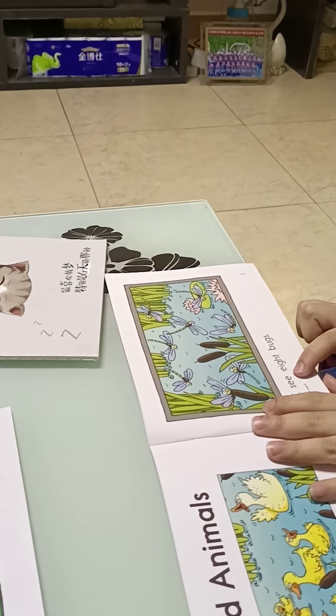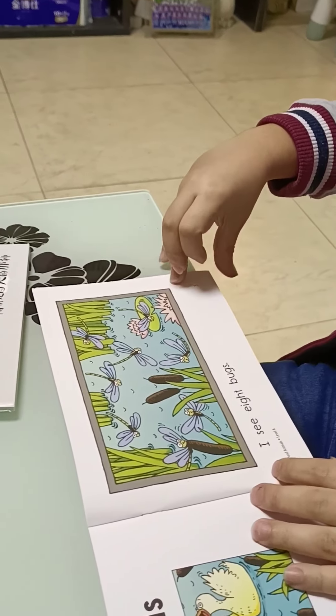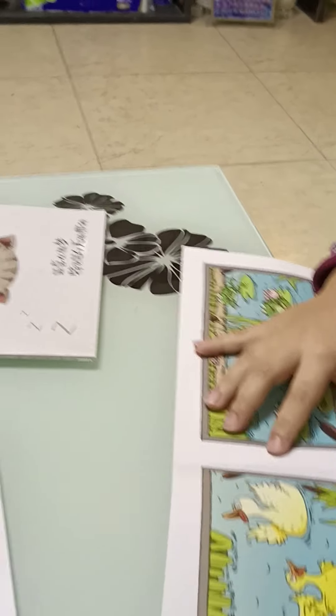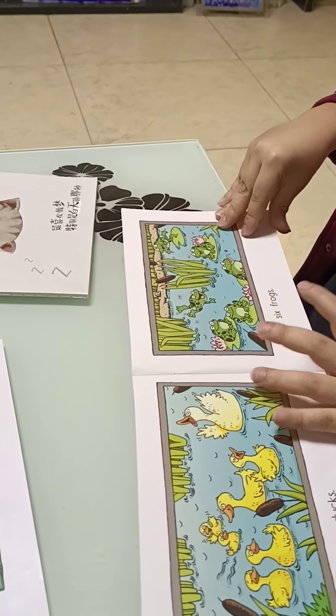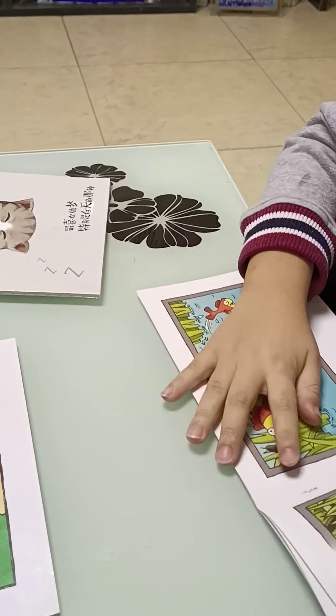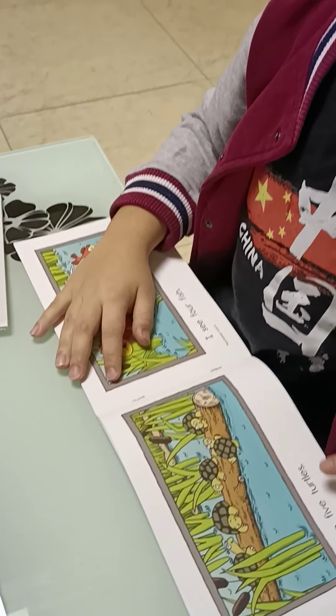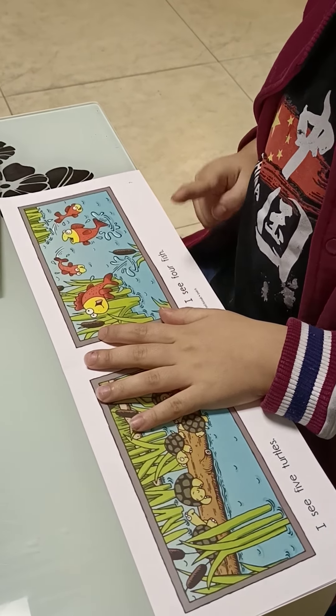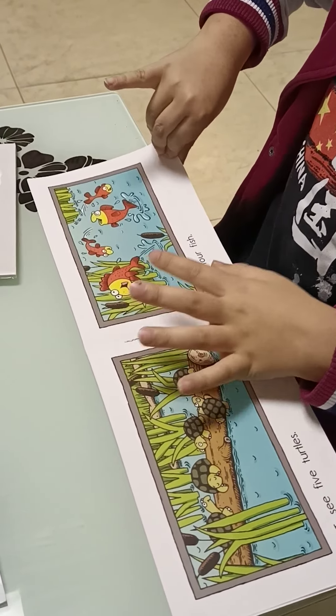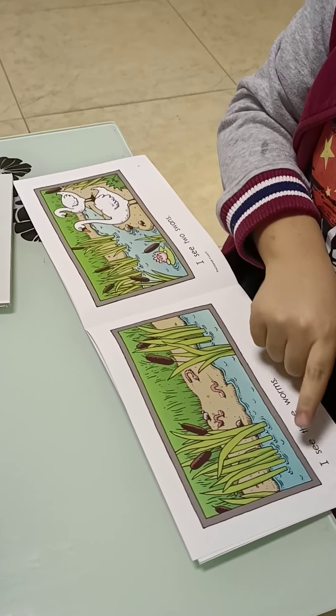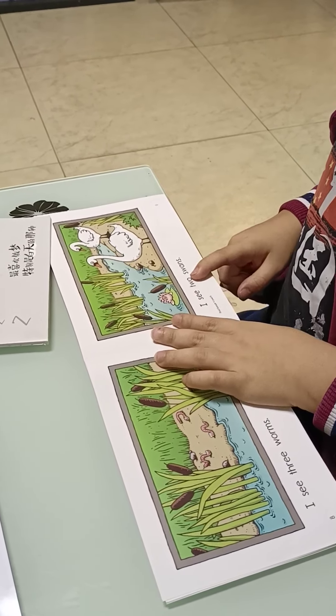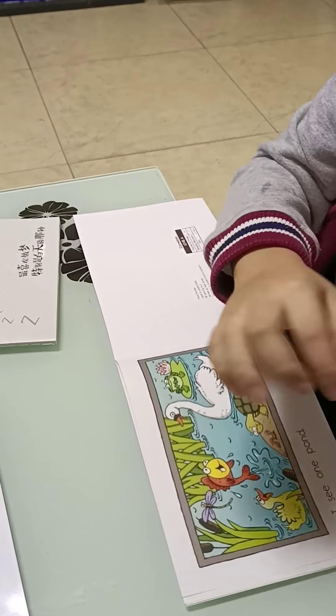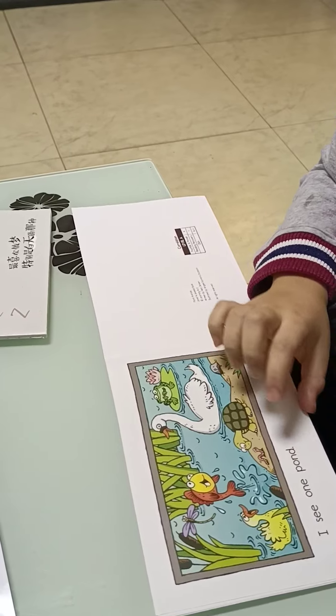I see eight bugs. I see seven ducks. I see six frogs. I see five turtles. I see four fish. I see three worms. I see two slugs. I see one pond.